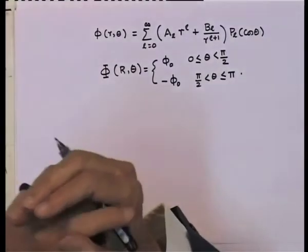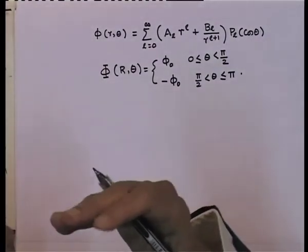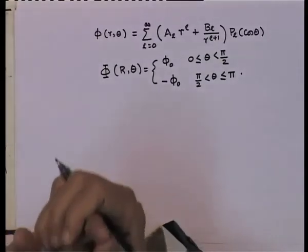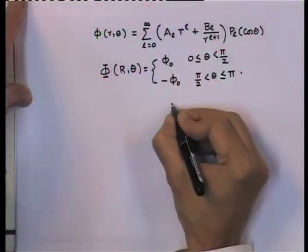The boundary conditions on the potential are: phi at radius R, theta equals phi_0 in the northern hemisphere (0 less than theta less than pi over 2), and equals minus phi_0 for pi over 2 less than theta less than pi. Inside, the potential must be finite, so we cannot have any term proportional to 1 over r or any of its powers. As a result, all b_l are zero.